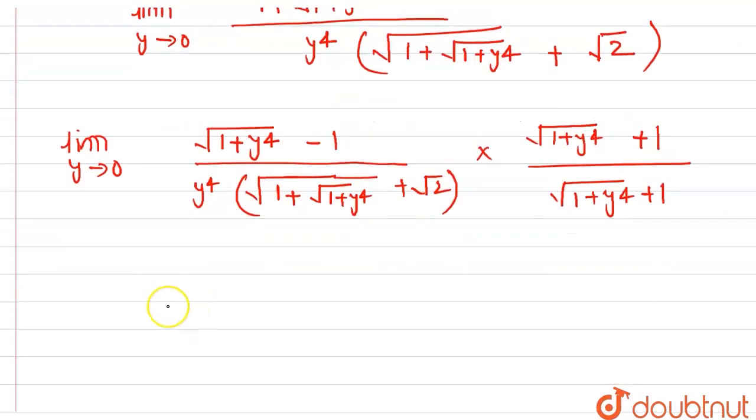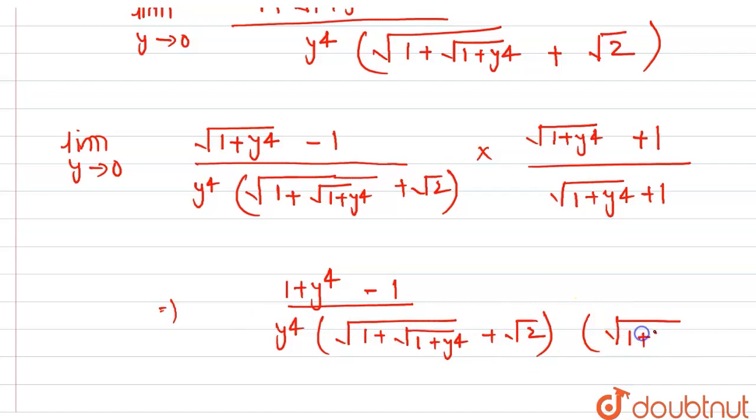After doing this operation, we got that our answer will be (1 + y⁴) - 1² in the numerator. This is √(1 + √(1 + y⁴)) + √2 and this will be √(1 + y⁴) + 1. This all term is in denominator.